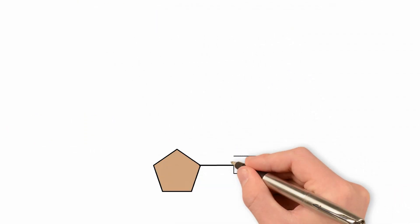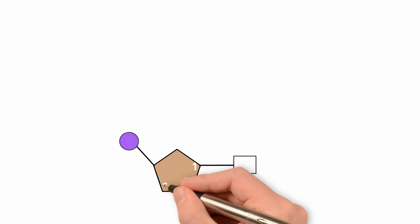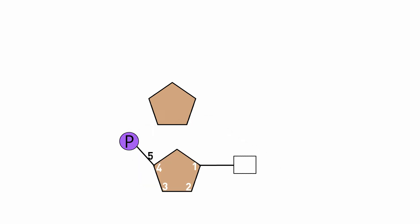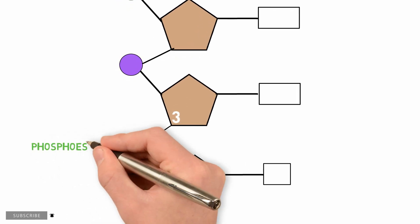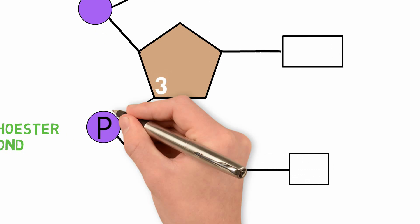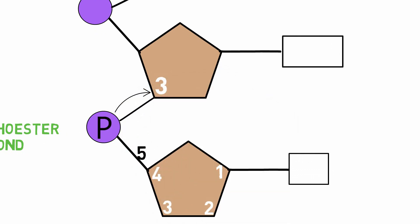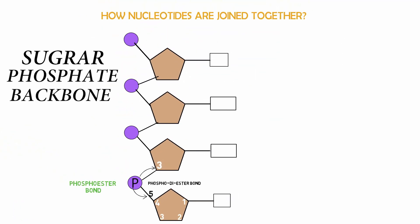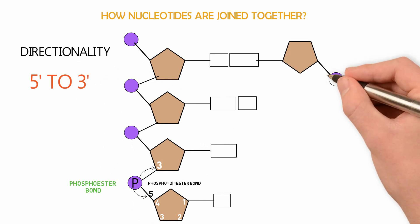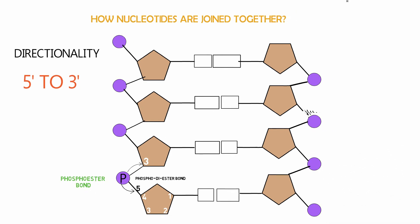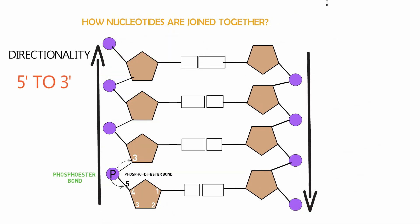The carbon atoms of the five-carbon deoxyribose are numbered 1', 2', 3', 4', and 5'. The fifth carbon atom of one nucleotide is combined with the phosphate group by an ester bond. The same phosphate group is bonded with the third carbon of the next nucleotide by another ester bond, so two nucleotides are joined by a phosphodiester bond. This phosphodiester bonding forms the sugar-phosphate backbone, providing directionality of 5' to 3'. The two strands of DNA are oriented in opposite directions, making them antiparallel.